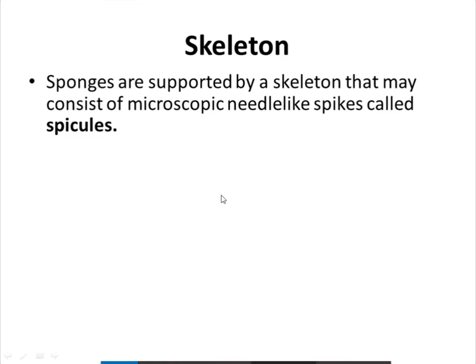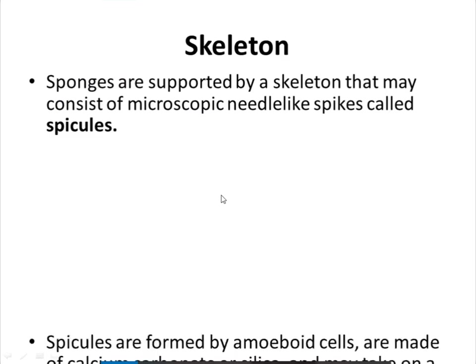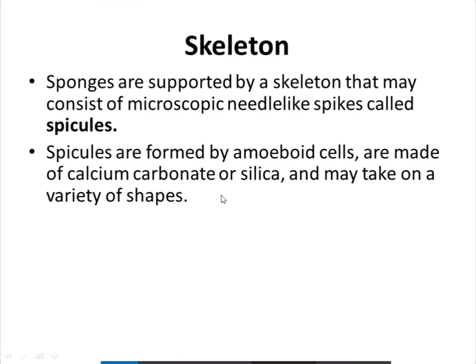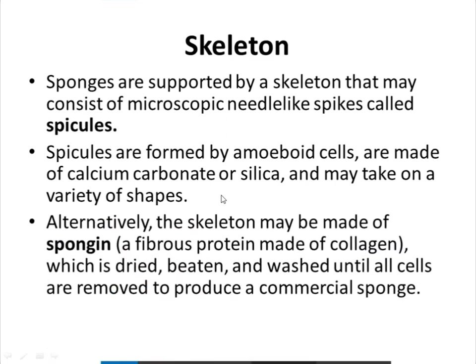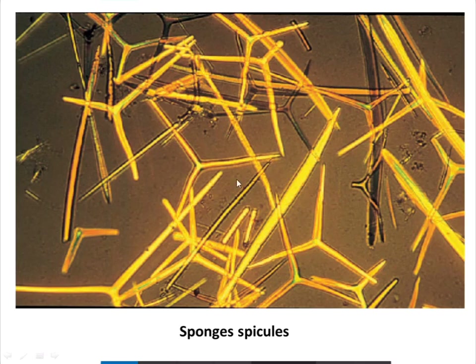Sponges are supported by a skeleton that may consist of microscopic needle-like spikes called spicules. Spicules are formed by amoeboid cells and are made of calcium carbonate or silica, taking on a variety of shapes. Alternatively, the skeleton may be made of spongin — a fibrous protein made of collagen — which is dried, beaten, and washed until cells are removed to produce a commercial sponge. The skeleton is thus composed of spicules and spongin.